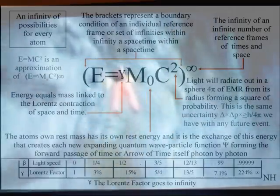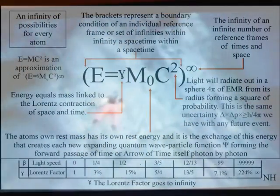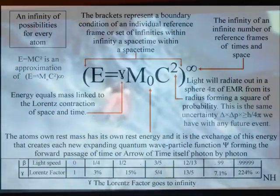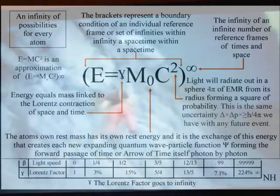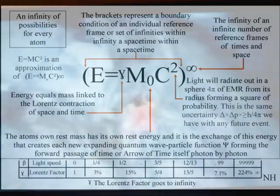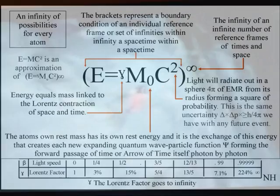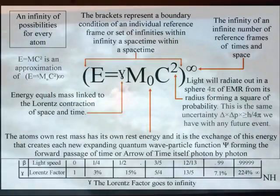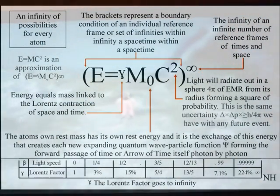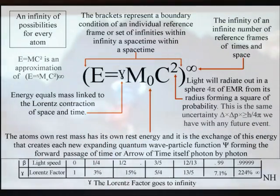Mass will increase relative to this, and each reference frame can be seen as a vortex in space formed by the rate that time flows. The C² is light radiating out in all directions, forming a sphere of probability.